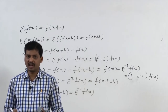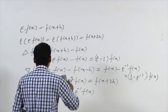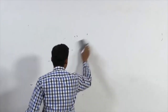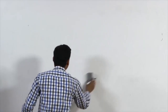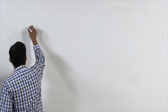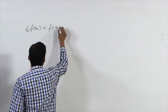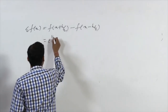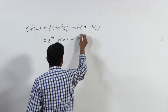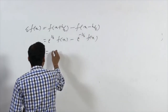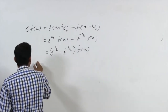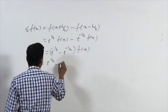The central difference operator δ can also be expressed in shift operator form. Since δ[f(x)] = f(x+h/2) − f(x−h/2) = E^(1/2)f(x) − E^(−1/2)f(x), we get δ = E^(1/2) − E^(−1/2).